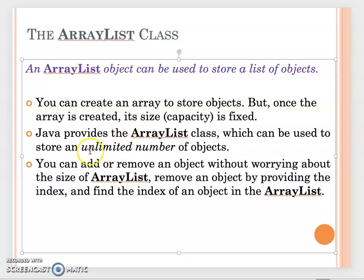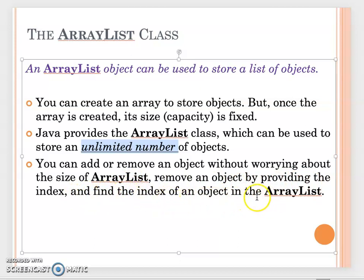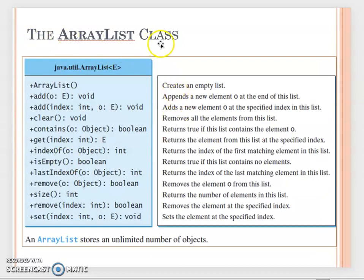ArrayList works very similarly to an array, but it can store an unlimited number of objects — the size can be enlarged or even shrunk. You can add or remove any object without worrying about capacity. You remove an object by providing the index, and ArrayList still allows you to use an index to find objects.